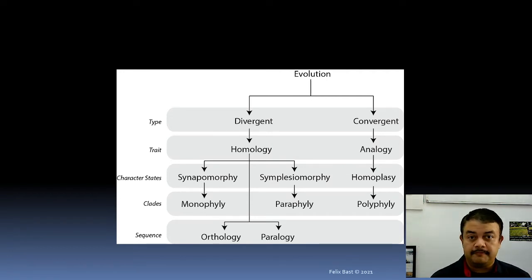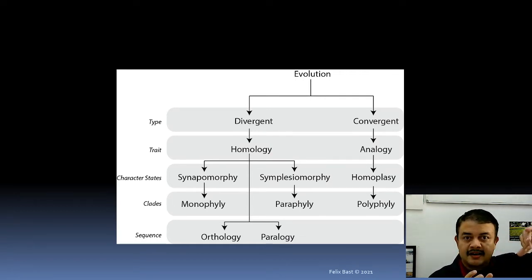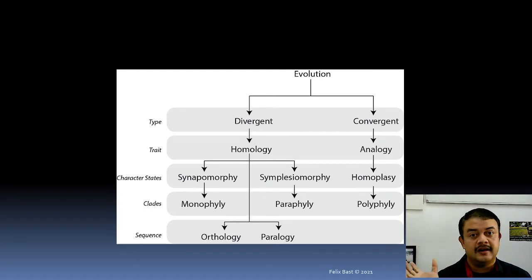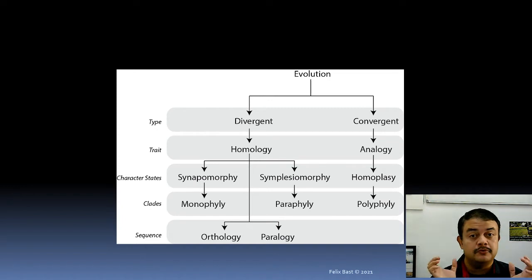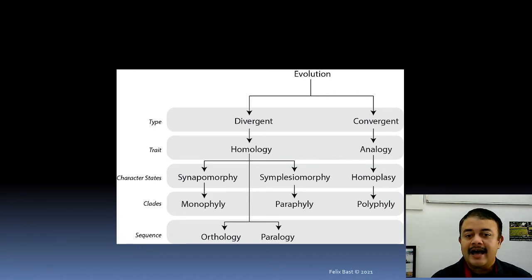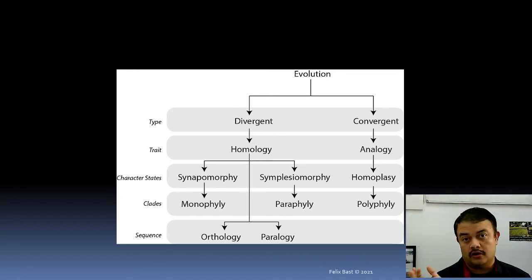A paraphyletic group like Reptilia requires at least two cuts from the tree of life because Aves inside it also needs to be cut off — so it is not a clade per se. Homoplasy leads to polyphyletic groups — completely unrelated organisms grouped together, like grouping butterflies, birds, and bats because they all have wings. That is a nonsensical classification. Homologous sequences can be either orthologous or paralogous.